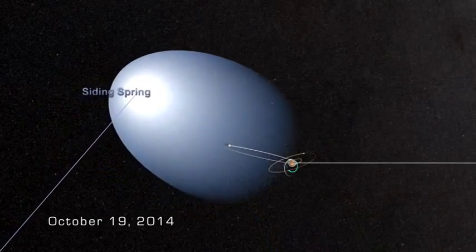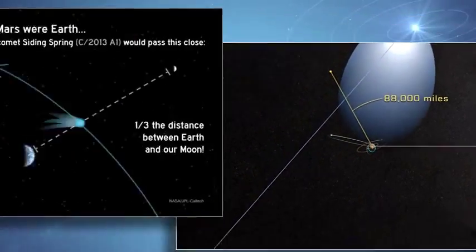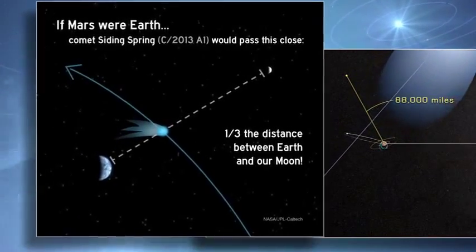On October 19th, Comet Siding Spring will come within 88,000 miles of the Red Planet, roughly one-third of the distance from the Earth to the Moon.